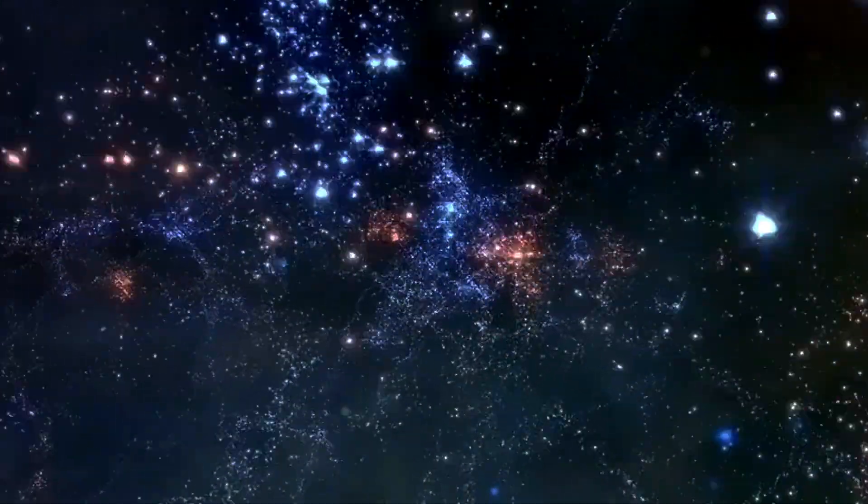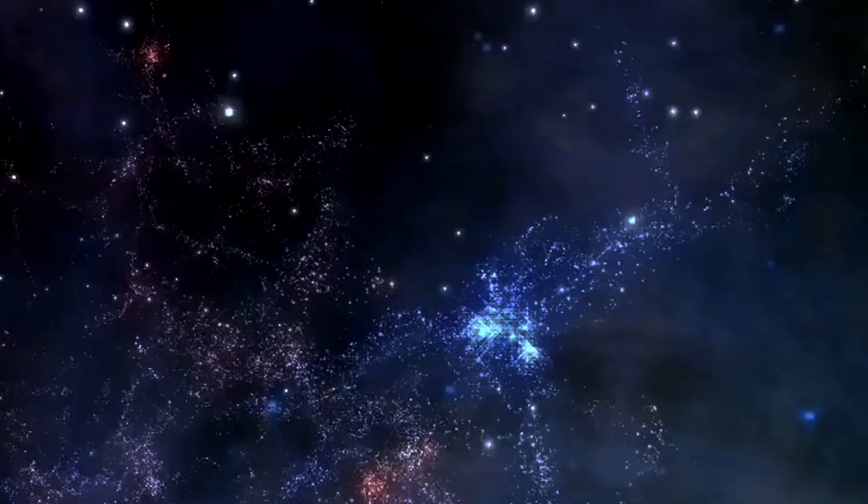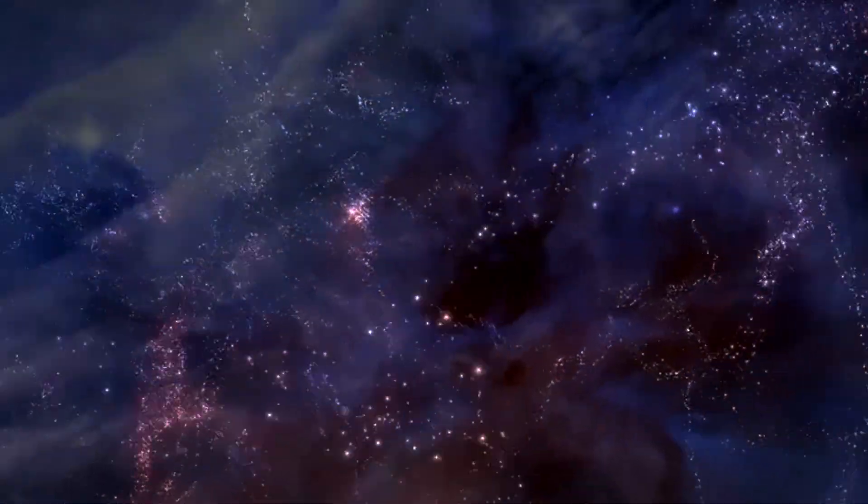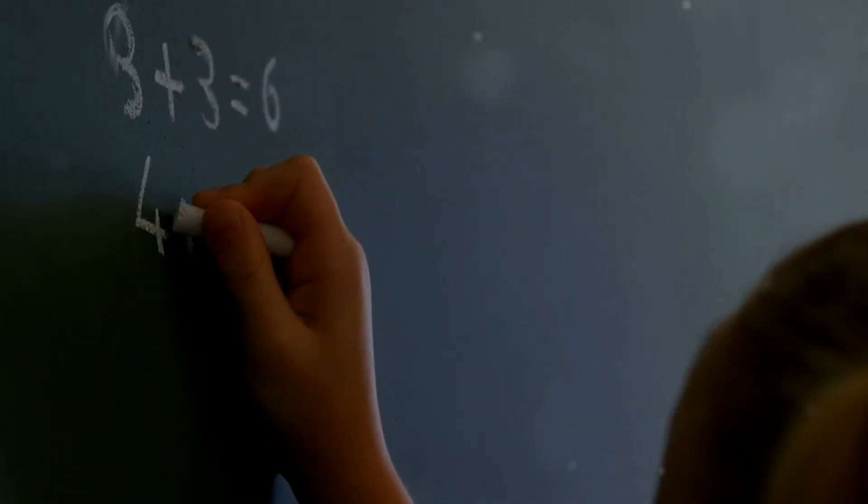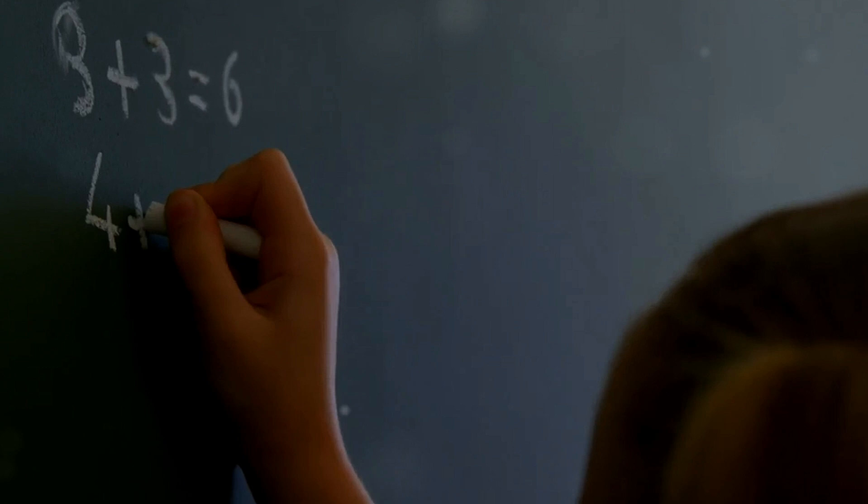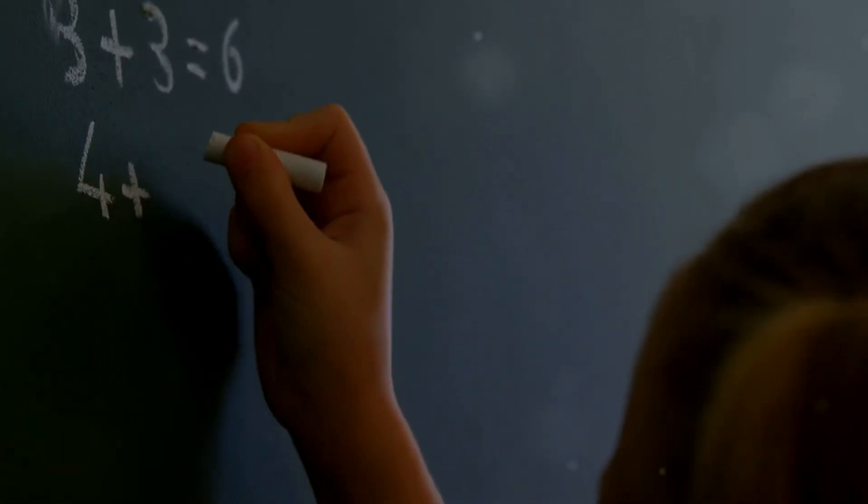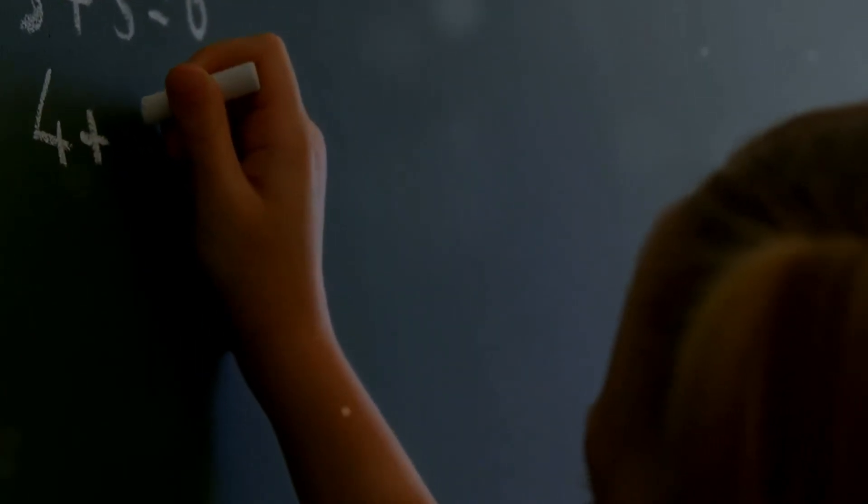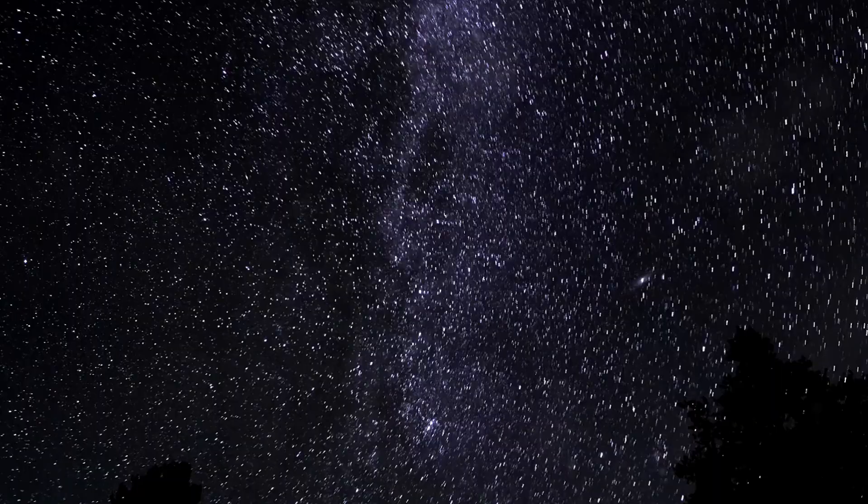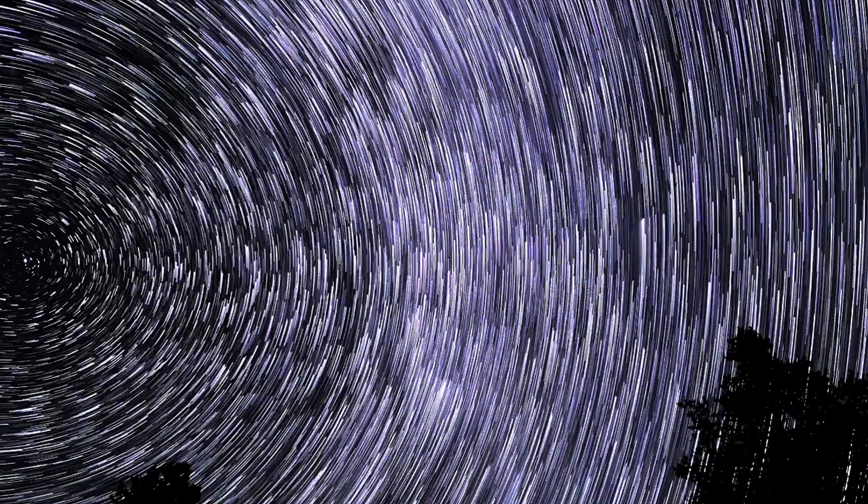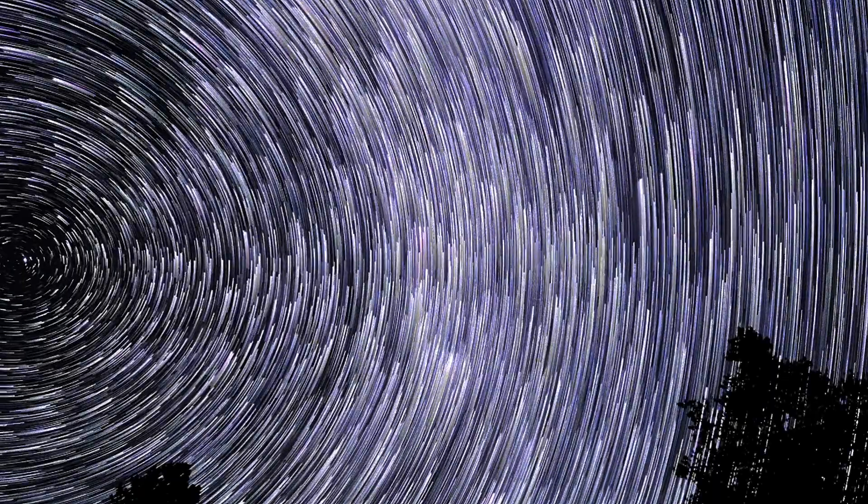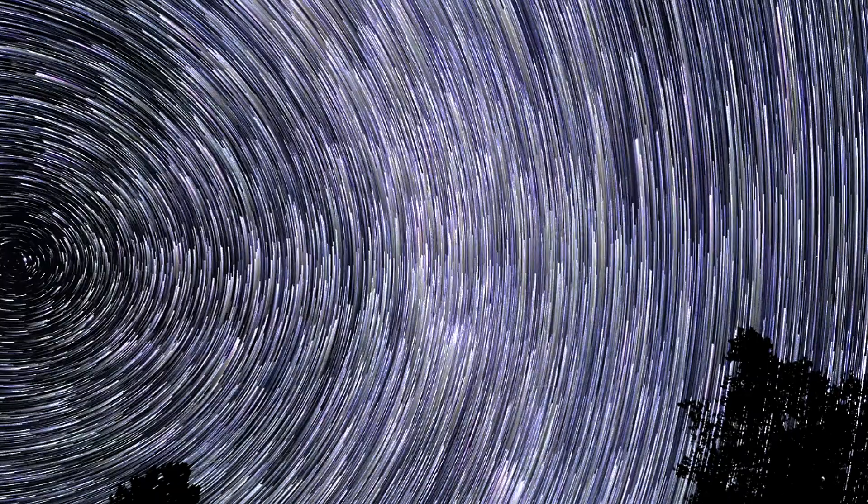At that time, the prevailing belief was that the universe was static, neither expanding nor contracting. To make his equations fit a static universe, Einstein added a term called the cosmological constant, denoted by the Greek letter lambda. This cosmological constant acted as a kind of anti-gravity force to counterbalance the pull of gravity and keep the universe static.